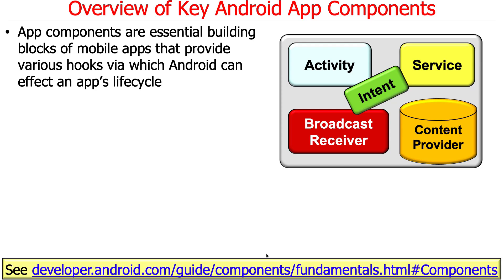If you were to ask someone what are the architectural elements in Android, they would tell you they're activities, services, broadcast receivers, and content providers. And some of these components are glued together with things called intents. This is what's used as the building block for all the different things you would build in Android, whether you're building the user-facing part, some background stuff, some data access stuff, some notification stuff, and so on.